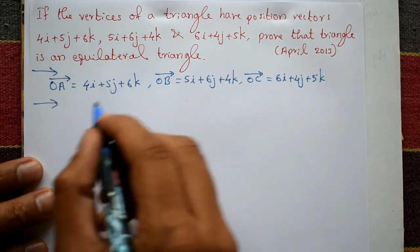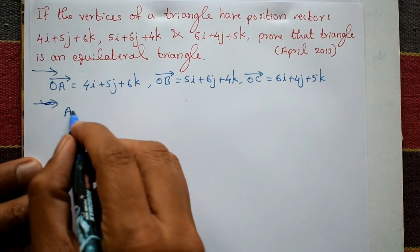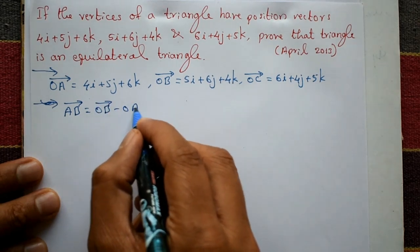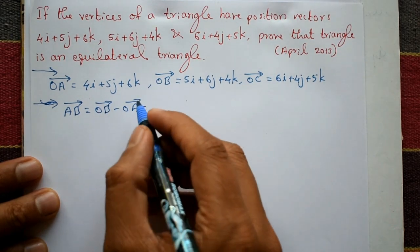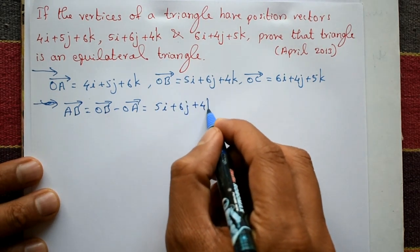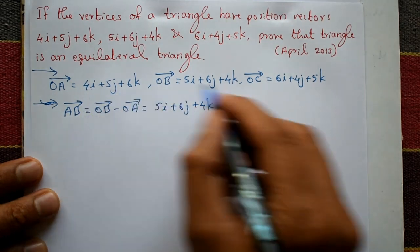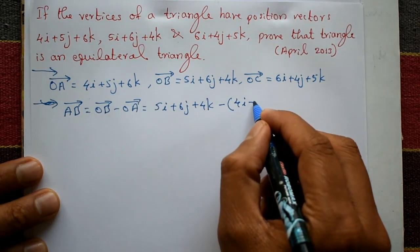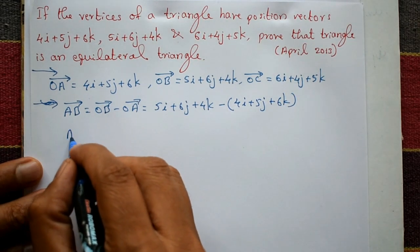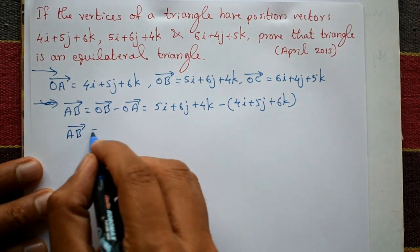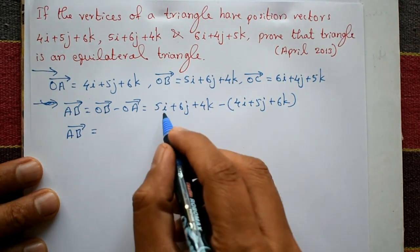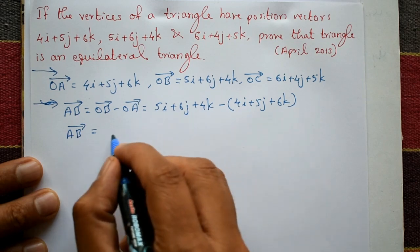To show it is an equilateral triangle, take vector AB. Vector AB is equal to OB minus OA. OB is 5i + 6j + 4k, minus OA which is 4i + 5j + 6k. Now compute vector AB by taking i to i, j to j, k to k.